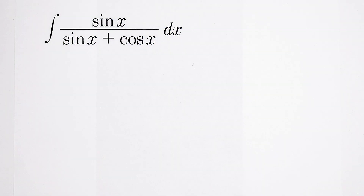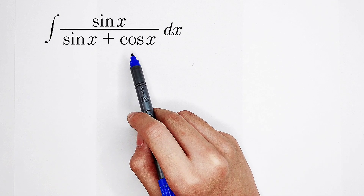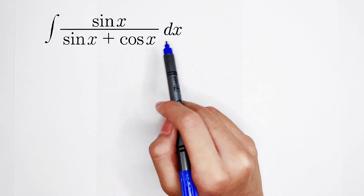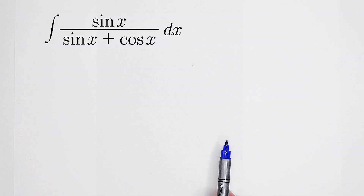Welcome to Math Widow, and today I'm going to share a wonderful integral question. How can I solve this math problem? You have to find the primitive of sine of x divided by sine of x plus cosine of x dx. There are several ways to solve it, but today I'm going to share the easiest way to solve this math problem.